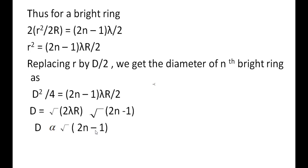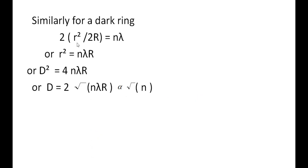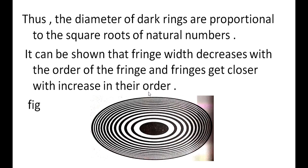For dark rings, the condition is 2t = nλ. Substituting t = r²/2R, we get r² = nλR, and replacing r with D/2: D² = 4nλR, so D = 2√(nλR). Therefore D is directly proportional to √n, where n = 0, 1, 2, 3, 4. The diameter of dark rings is proportional to the square root of natural numbers.